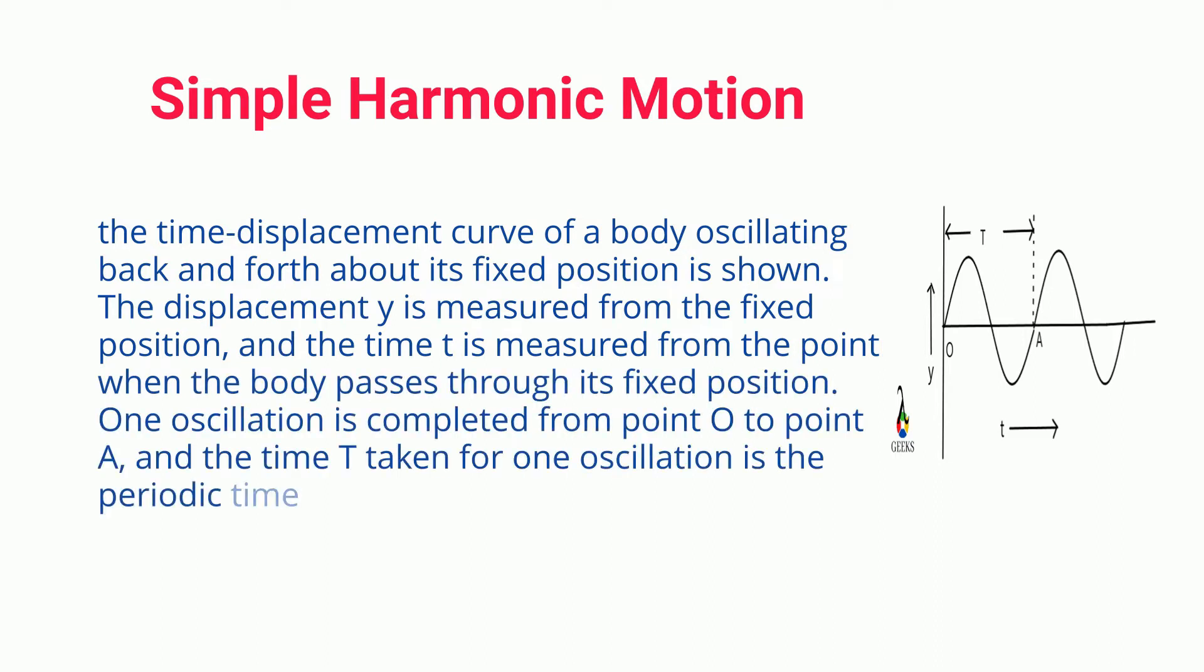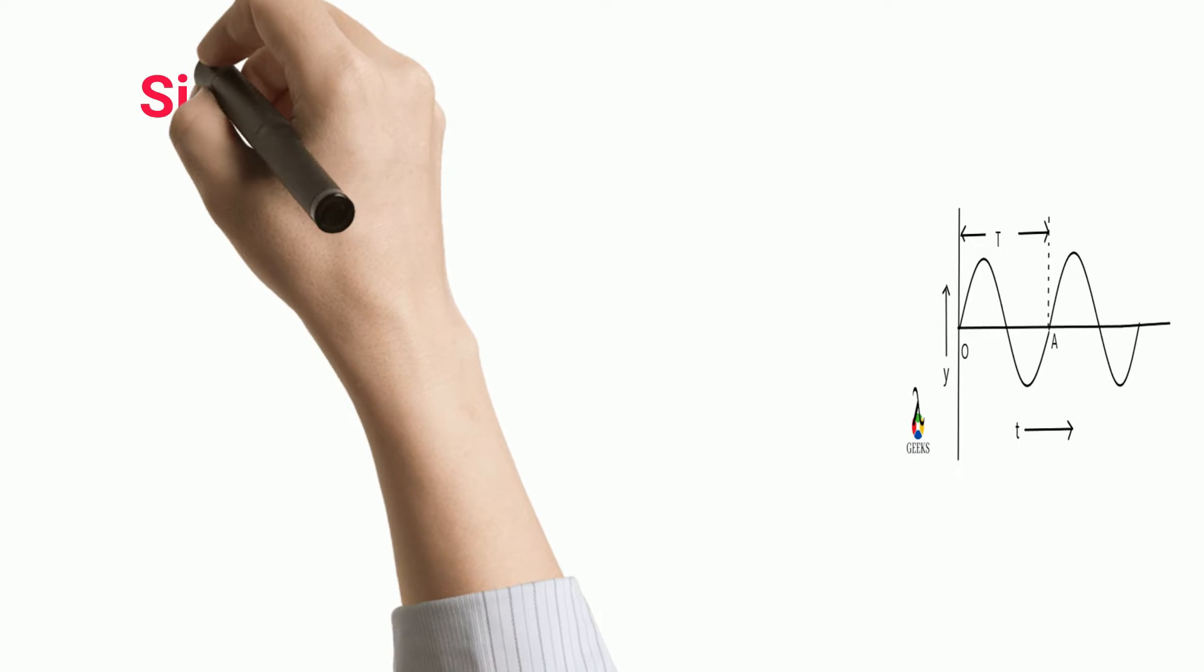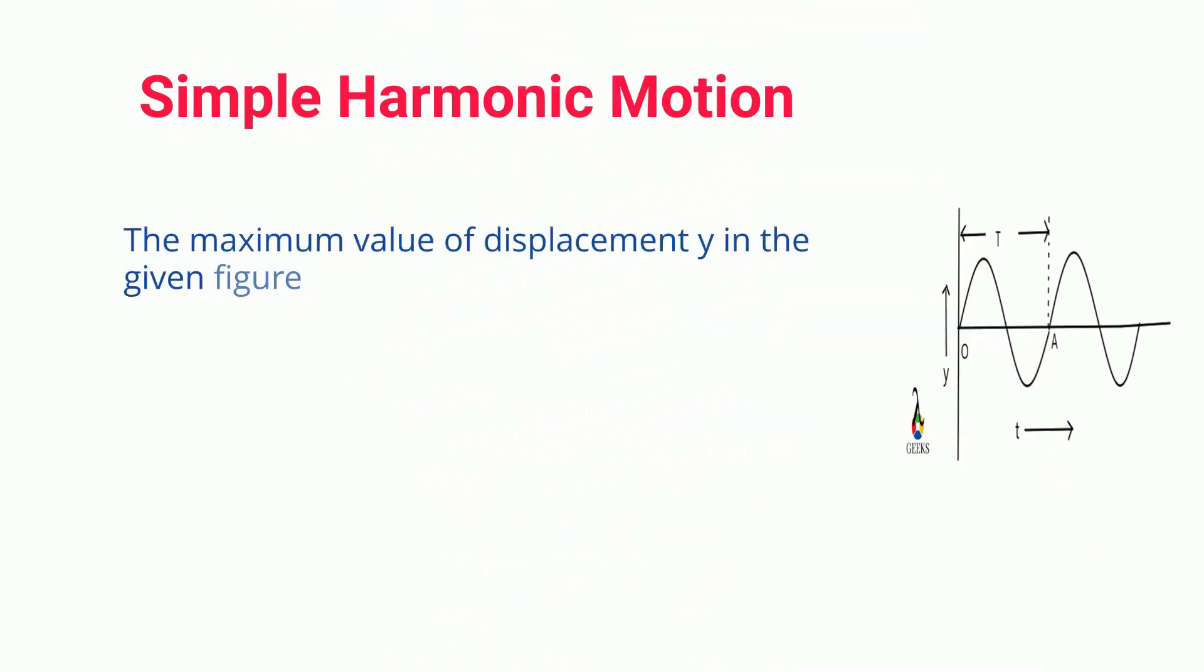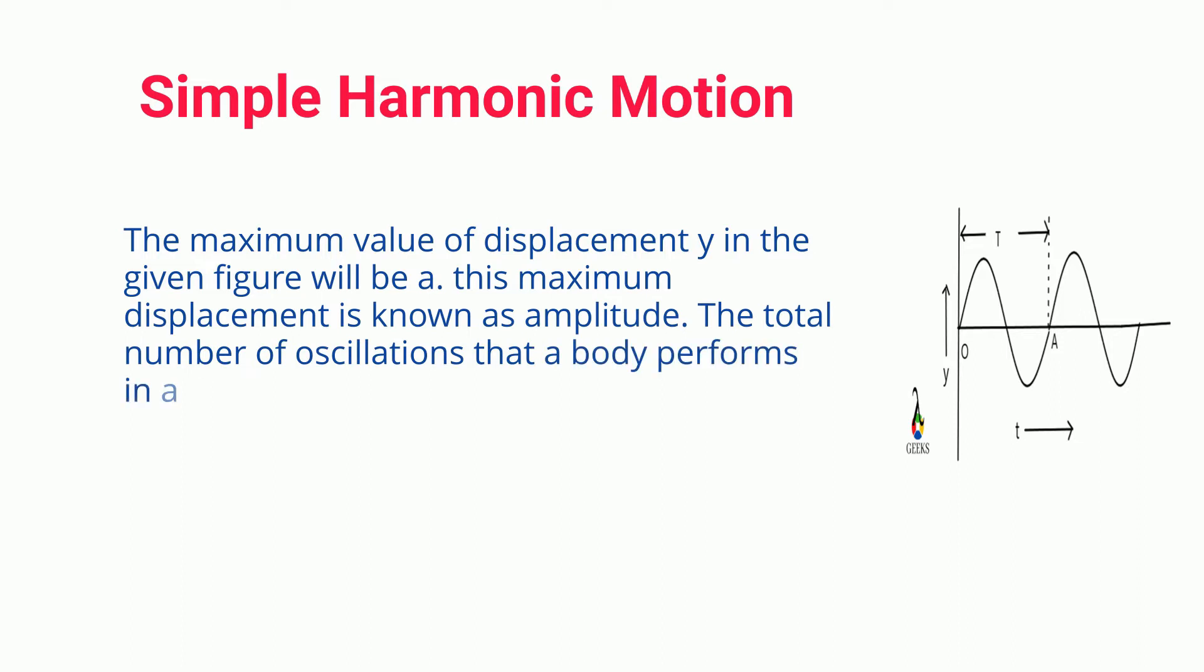The displacement Y is measured from the fixed position, and the time T is measured from the point when the body passes through its fixed position. One oscillation is completed from point O to point A, and the maximum value of displacement Y in the given figure will be A. This maximum displacement is known as amplitude.